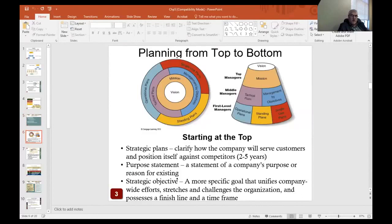Top management is responsible for developing long-term strategic plans. Strategic planning begins with a purpose statement and strategic objectives. A purpose statement is a statement of a company's purpose or reason for existing. In other words, it is a mission statement, the reason the company exists. Purpose statements should be clear and consistent with widely shared company beliefs and values. Strategic objectives are more specific goals that challenge the organization and provide a finish line and a time frame.